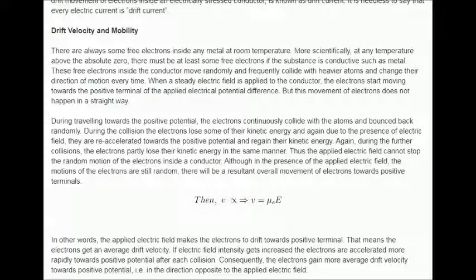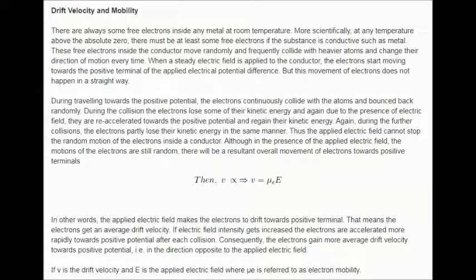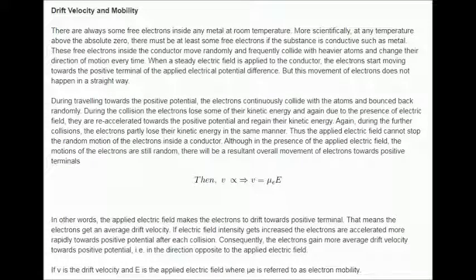In other words, the applied electric field makes the electrons to drift towards positive terminal. That means the electrons get an average drift velocity.